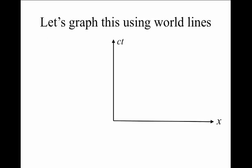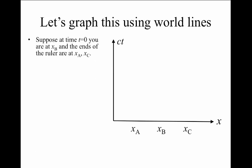But let's look at this example in a little bit more detail using world lines on a graph. First, I'm going to suppose that time t equals zero, I'm at location xB, because that's the center of the meter stick. And then I'm going to be asking all about what happens when light arrives at locations xA and xC.